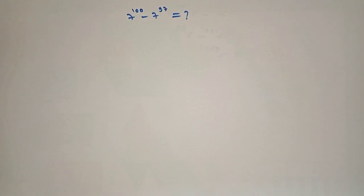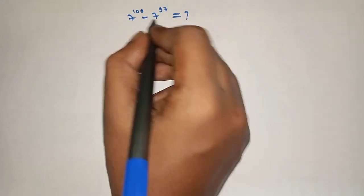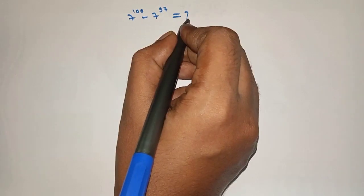Hello friends, welcome to AHA math. 7 raised to 100 minus 7 raised to 97 is equal to what? So let's solve.